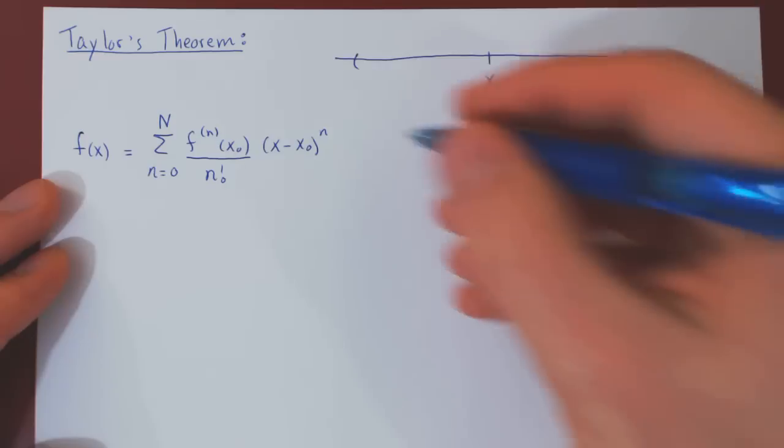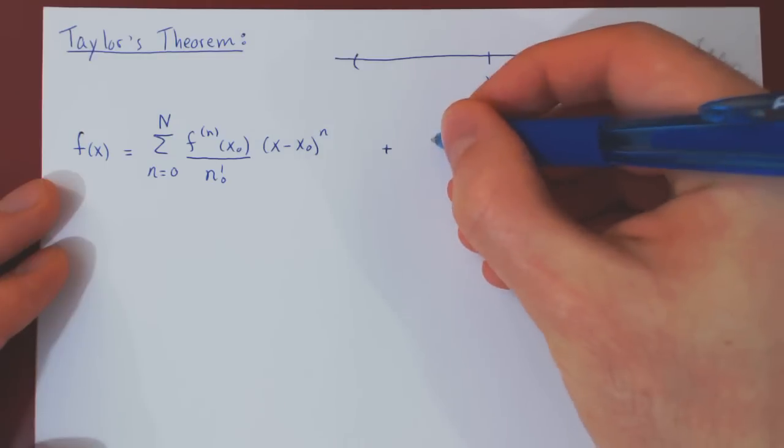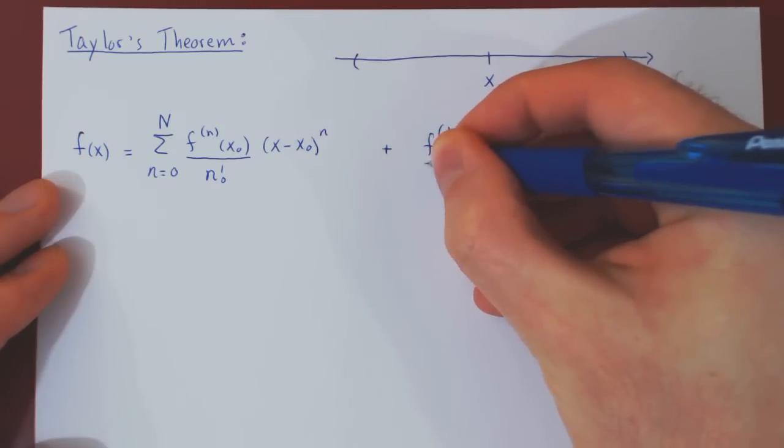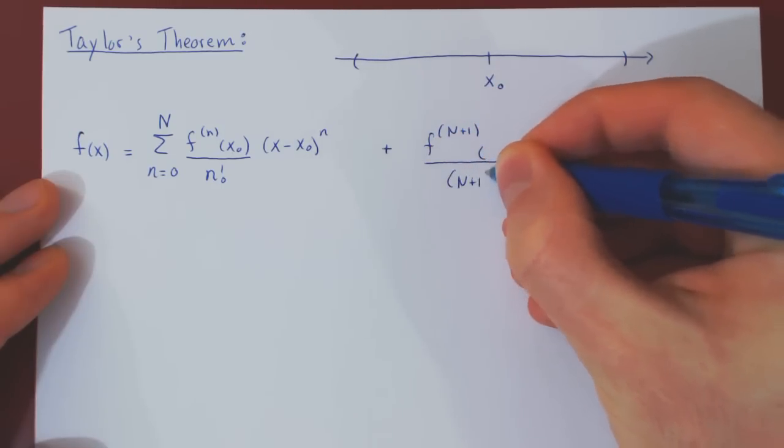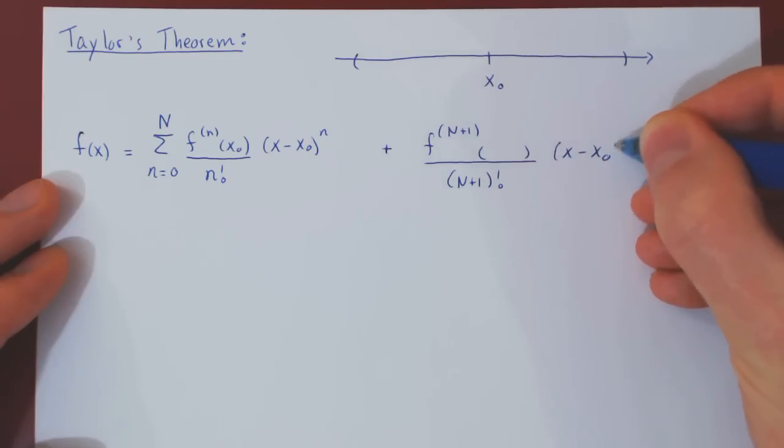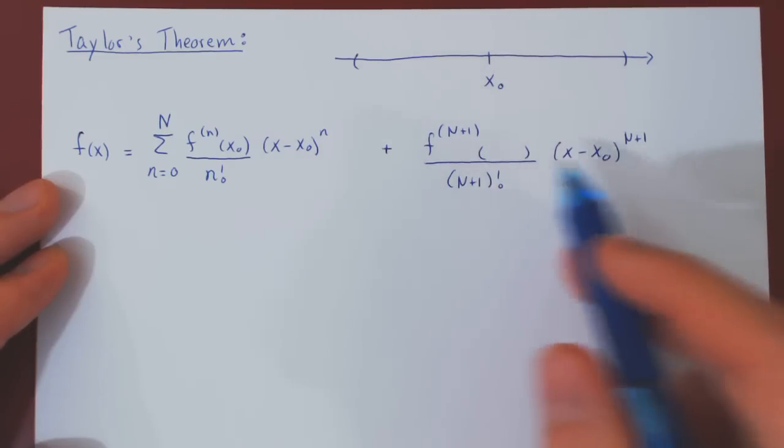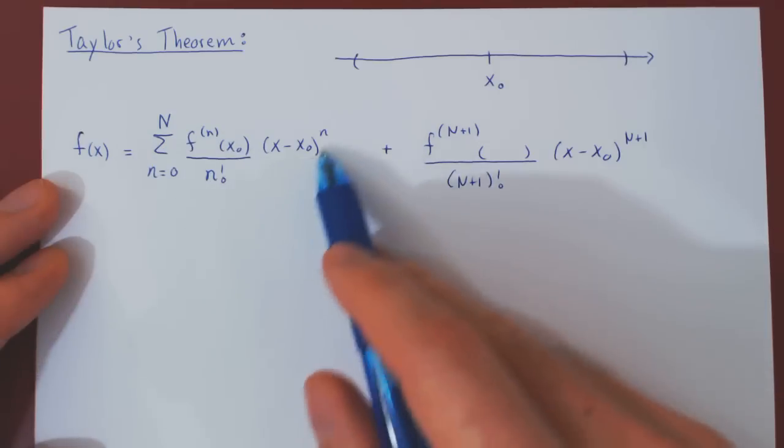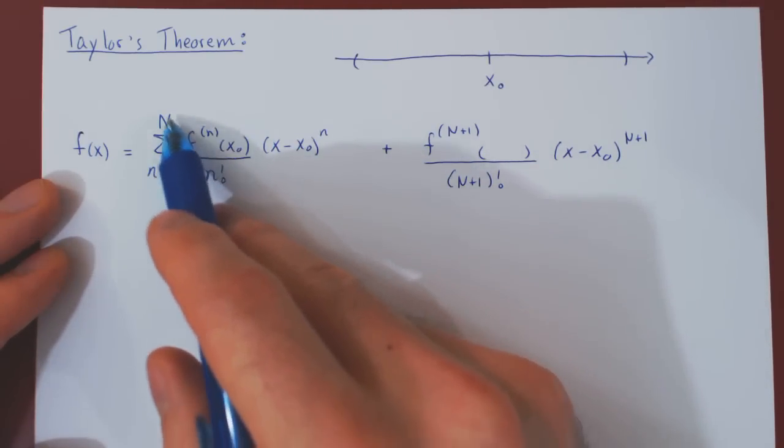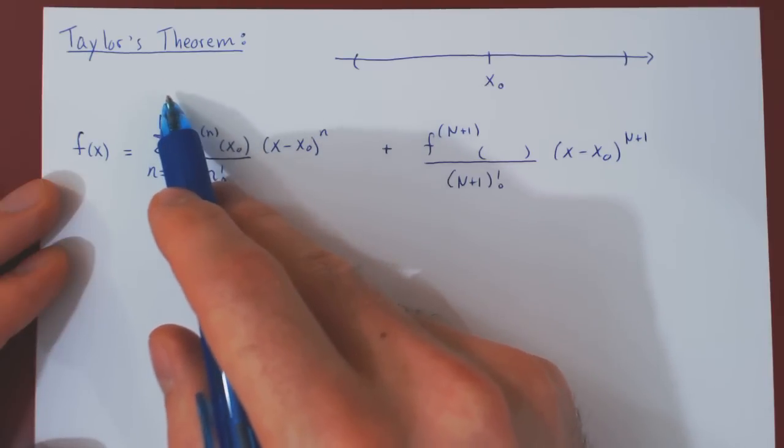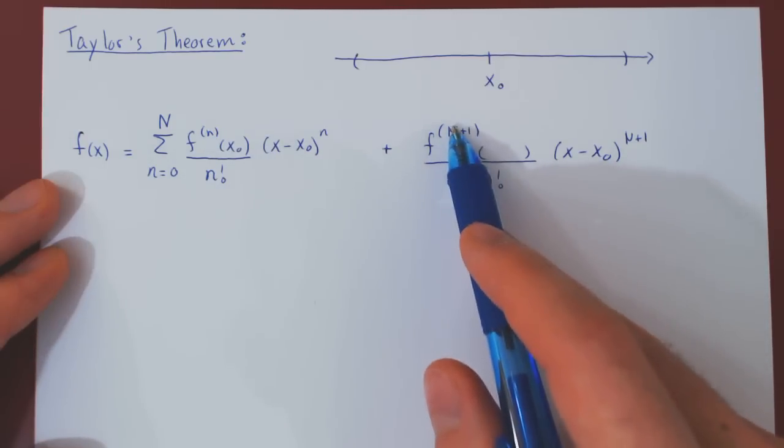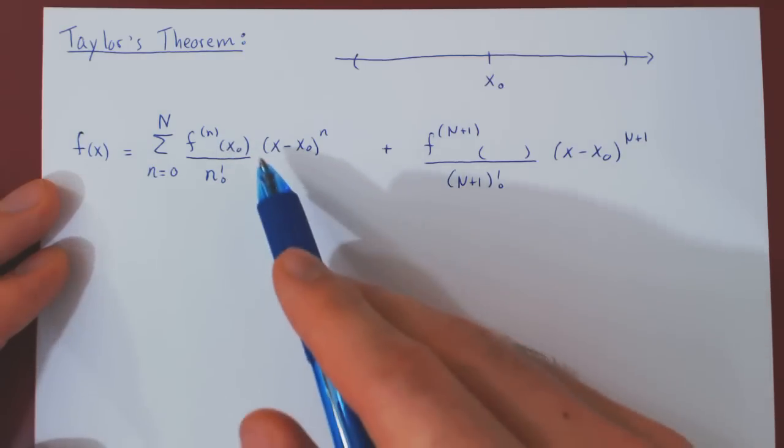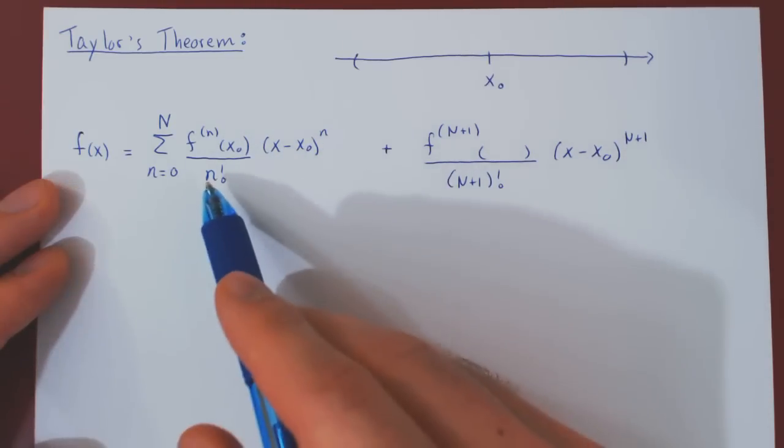Now, of course, the equality is not so simple. There is also an error term, also sometimes called the remainder term. The remainder term is the first omitted term of the truncated series. After lowercase n takes on uppercase N, the next value is uppercase N plus 1. So this is the N plus 1 derivative of f at, not exactly the center of the expansion, but some value close to it, times x minus the center to the n plus 1 over n plus 1 factorial.